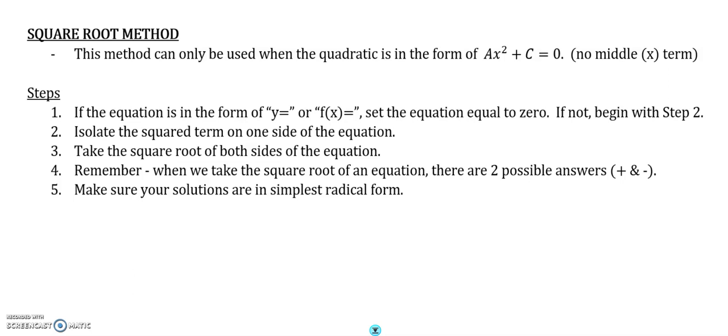If it is, then we're good. We're going to isolate the squared term on one side of the equation, take the square root of both sides of the equation. Remember that when we take the square root, we're going to have two possible answers, that plus and minus, and then we make sure our solutions are in simplest radical form if necessary.